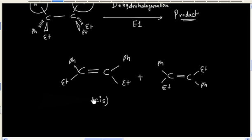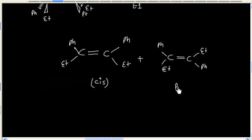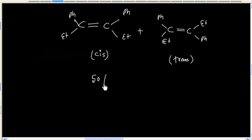So we have cis product and we will have trans product. Basically these two products will be obtained in equal amount, that is 50% cis and 50% trans.